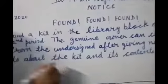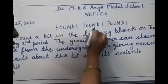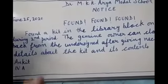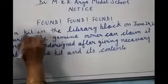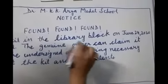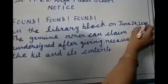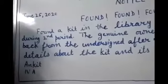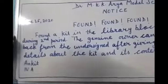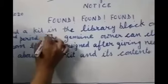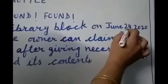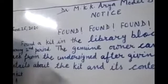As we are writing about a found item, we write the heading 'FOUND'. Then write the body of the notice: 'Found a kit in the library block.' State what you found — a kit — and where — in the library block. When you found it: June 24th, 2020, during the second period. These details are already given in the question and you are to write the same.